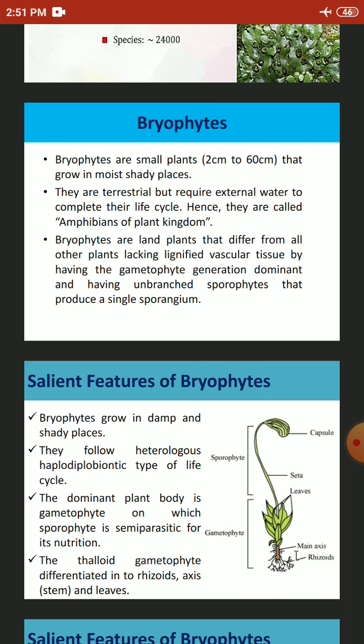The rhizoids of bryophytes are analogous to the roots of higher plants. Morphologically, the origin is different: the rhizoids develop from the gametophytic generation, whereas the roots of higher plants arise from the sporophytic generation. But they are homologous structures, meaning they have a similar function to the roots of higher plants — absorption and attachment. The function of the roots of higher plants is performed by the rhizoids of bryophytes.